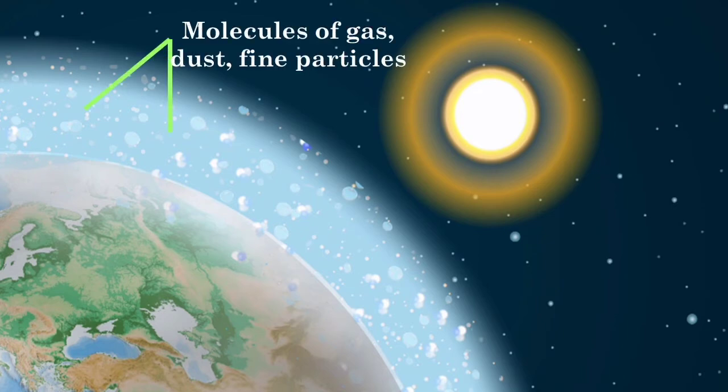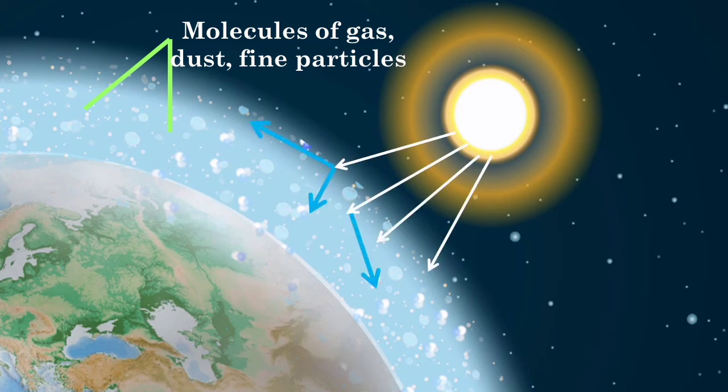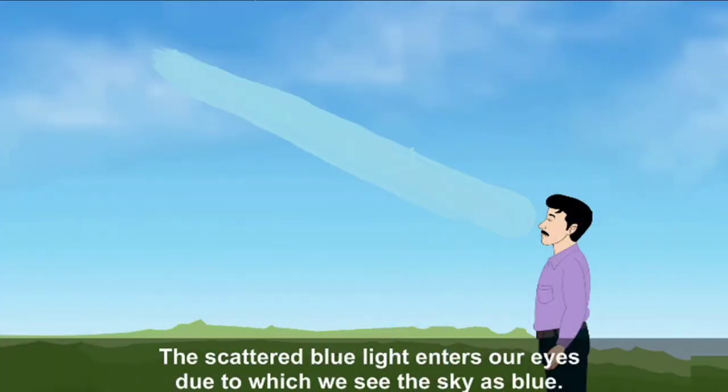So when sunlight, that is white light, enters into the atmosphere, these molecules and the fine particles prominently scatter blue-violet light of shorter wavelength. Red-orange colored light of longer wavelength is scattered the least. The scattered blue light enters our eyes and we see the clear sky to be blue.